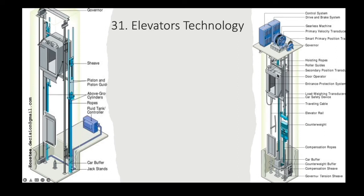On the right is the traction type elevator. The traction machine at the top moves the elevator car — the cabin — using cables routed through a pulley. There are versions with gears and versions that are gearless. The cost of a hydraulic elevator differs from a traction elevator, and for high-rise buildings, traction is typically used rather than hydraulic.